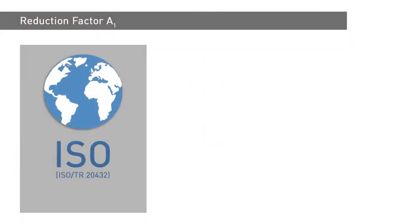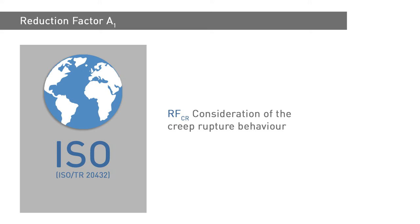This is equivalent to the designation RFCR — Reduction Factor for Creep Rupture — used in the international guidelines for the determination of the long-term strength of geosynthetics for soil reinforcement, ISO/TR 20432.